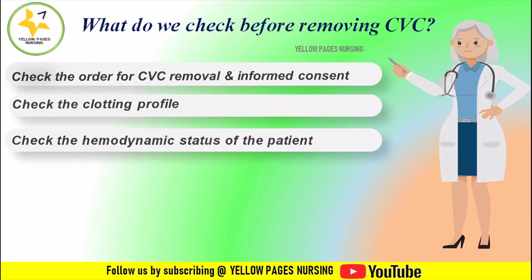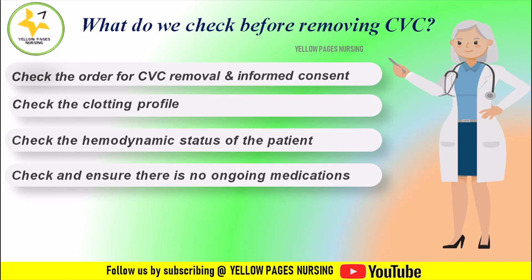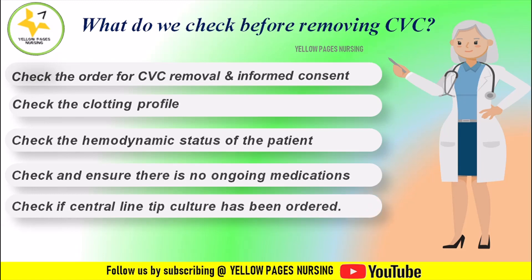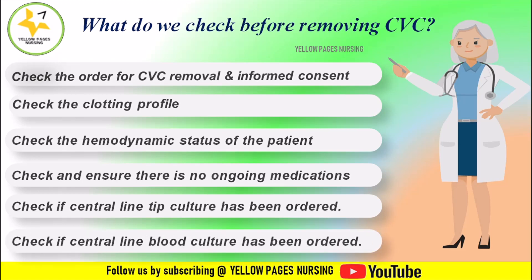Next, check the patient's hemodynamic status to ensure they are stable and all vital parameters are normal, and confirm there are no ongoing medications. Check if a central line tip culture has been ordered — if so, arrange the articles and label the container before sending the tip to the lab. Also check if a central line blood culture has been ordered, as the blood sample must be taken before removing the catheter.